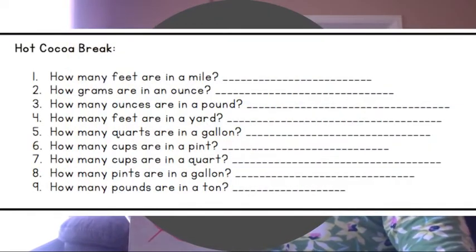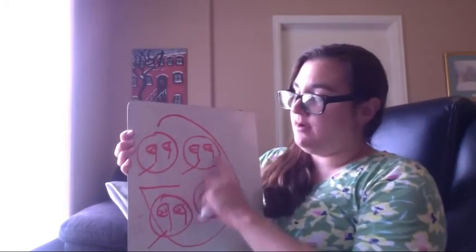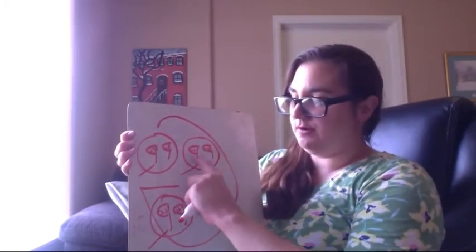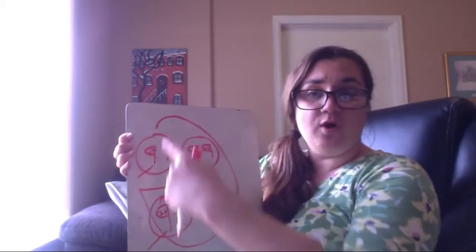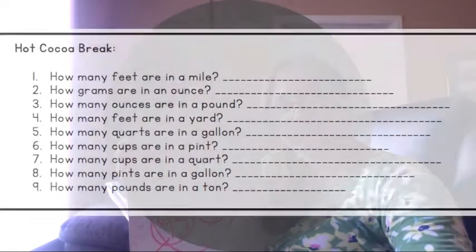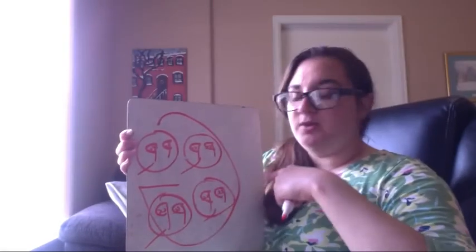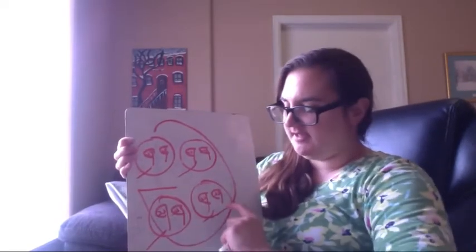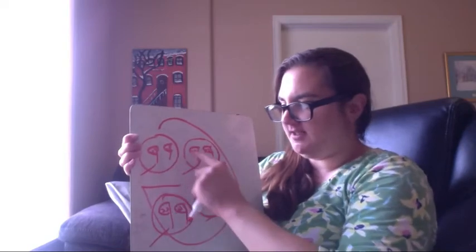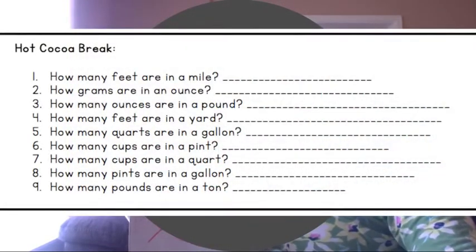How many cups are in a quart? So here I need to count up my C's in one Q. So I have one, two, three, four C's in one Q. So a cup is one fourth of a quart. How many pints are in a gallon? So in this one, I need to count up the P's in my total G. So in this case, I have one, two, three, four, five, six, seven, eight P's. So that means there are eight pints.